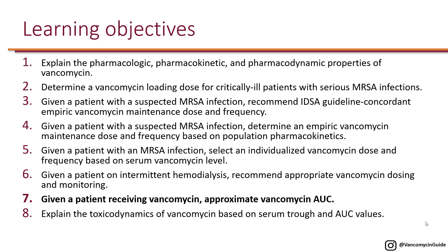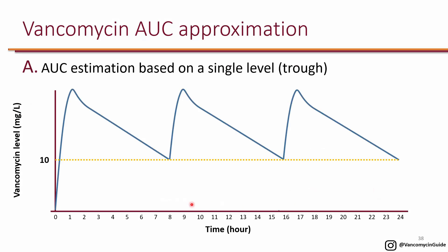The next learning objective is, given a patient receiving vancomycin, to approximate the vancomycin AUC. Remember that AUC is for a 24-hour period. In this example we're showing Q8 dosing of vancomycin. On the horizontal axis you have time from 0 to 24, and on the vertical axis you have vancomycin concentration in the blood. If you give the dose three times a day (Q8), you get a peak three times, and the area under all of these curves is considered the AUC for the 24-hour period.